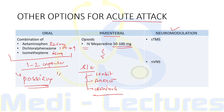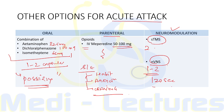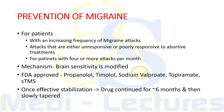Neuromodulation options include single-pulse transcranial magnetic stimulation (sTMS), which is FDA-approved — two pulses applied at the onset of attack. Non-invasive vagal nerve stimulation is also FDA-approved, given as one to two doses of 120 seconds each for acute attack treatment.